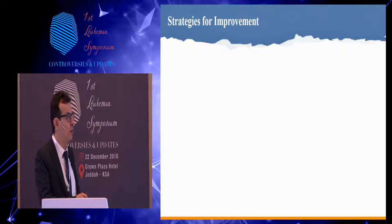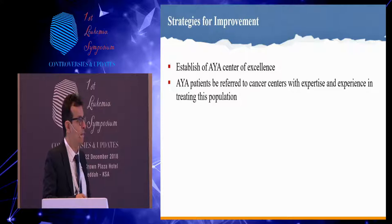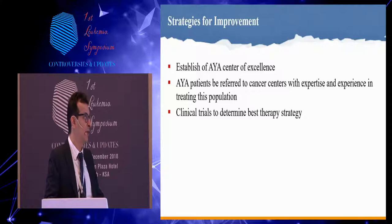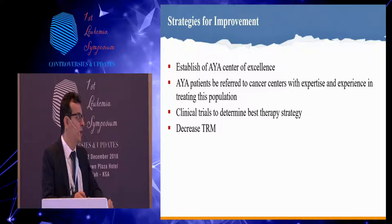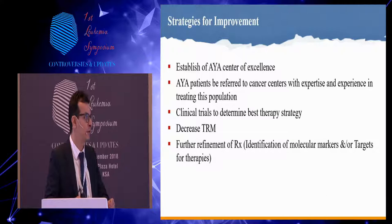How can we do better? Some strategies include establishing an AYA Center of Excellence, or referring those patients to a center with excellent experience in dealing with AYA patients from different aspects — where adult and pediatric hematologists work together alongside team members including psychosocial support. Clinical trials are certainly needed, though challenging to conduct. All efforts toward decreasing TRM should be utilized, with further refinement of treatment by incorporating targeted therapy as discussed in previous lectures.